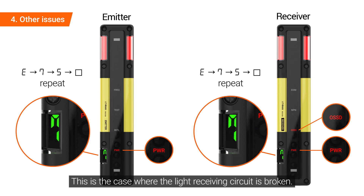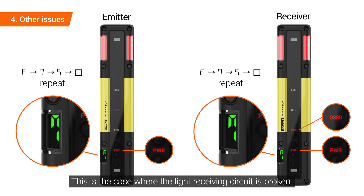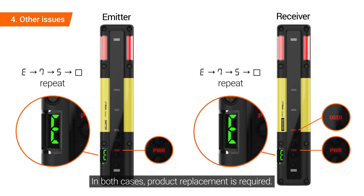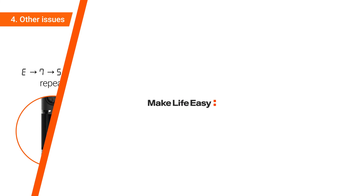This is the case where the light receiving circuit is broken. In both cases where the light emitting element or light receiving circuit is broken, product replacement is required.